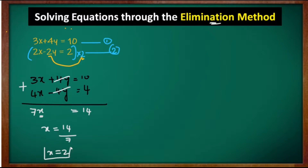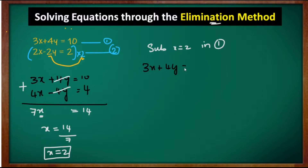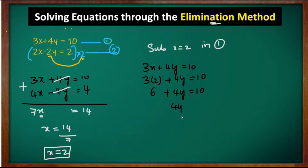Solving 7x = 14: x = 14/7 = 2. Now substitute x = 2 into the first equation: 3x + 4y = 10. So 3(2) + 4y = 10, giving 6 + 4y = 10, 4y = 4, y = 1. Therefore x = 2 and y = 1.